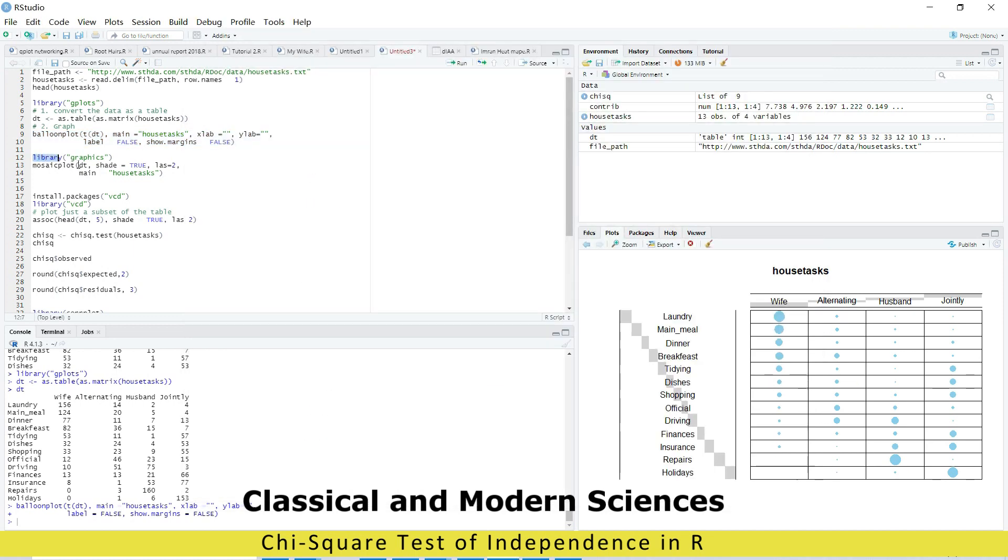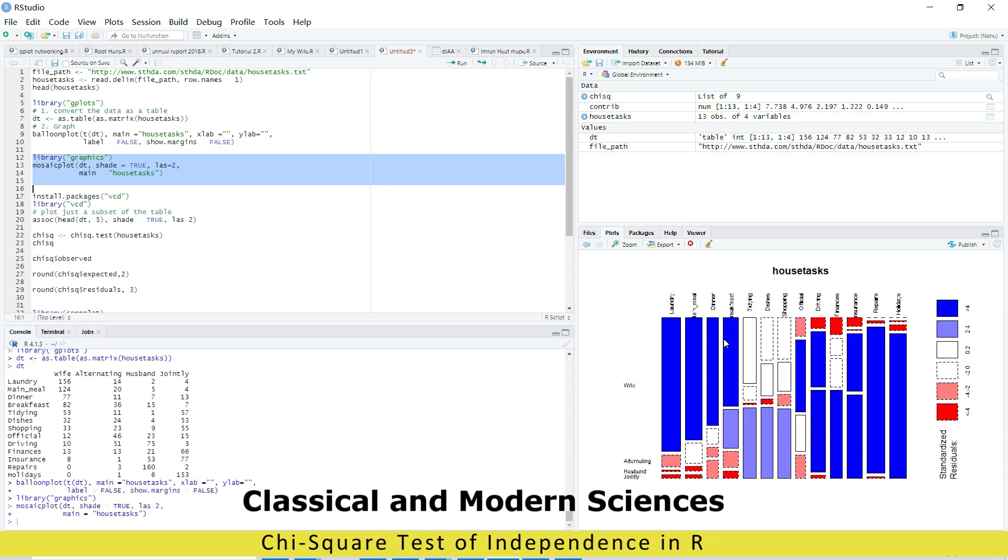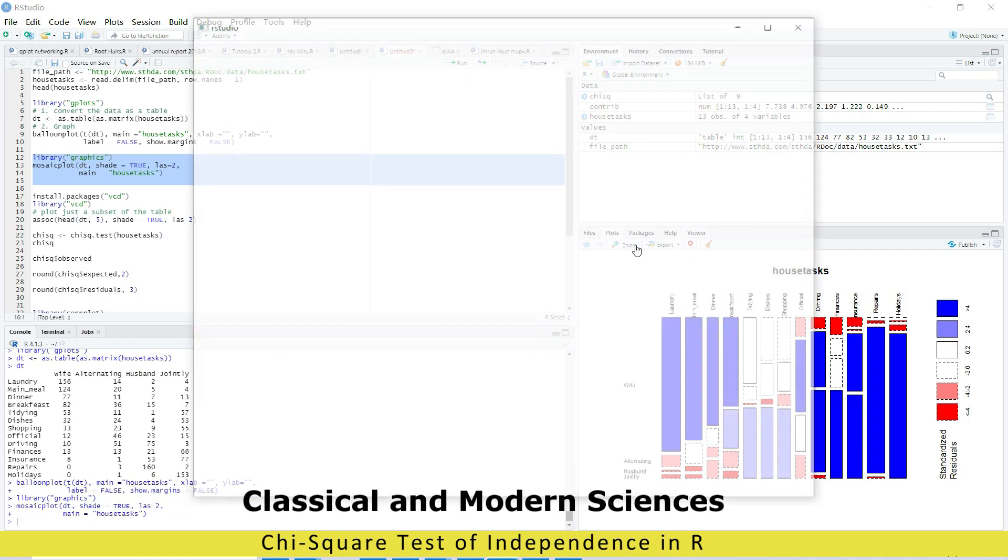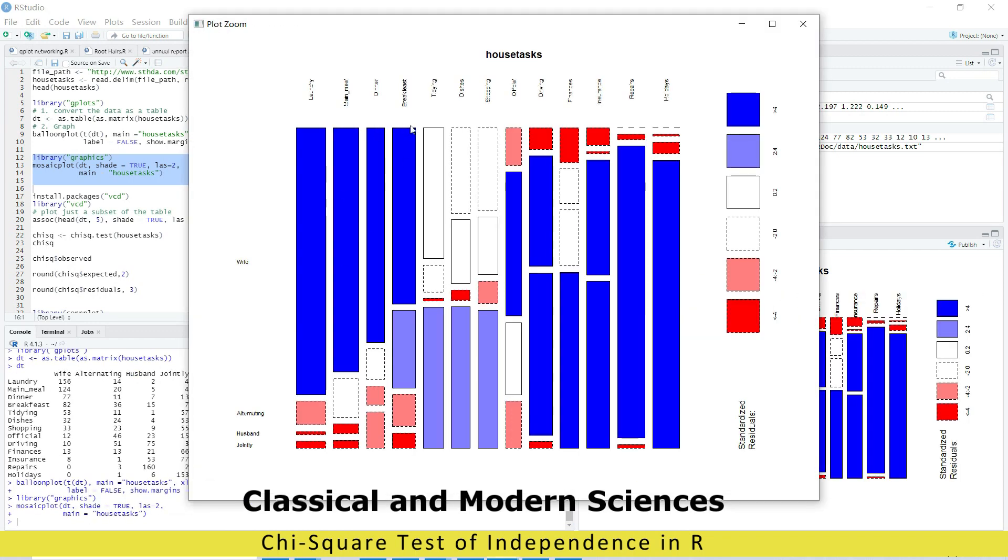Now we will make a mosaic plot. Now you can see this mosaic plot beautiful. Wife share in house trust and husband share and jointly they work together in their house.